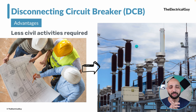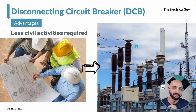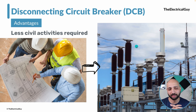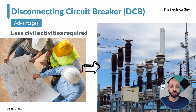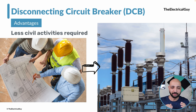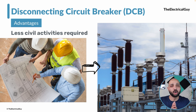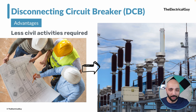Since we are eliminating a dedicated disconnector device, there is also less civil activity required in the substation. With a dedicated disconnector, you need to build a separate civil foundation, then a support structure, and then the disconnector on top. But since the disconnecting circuit breaker combines both functions, it can be fitted on a single foundation, resulting in a significant reduction in civil activities as well.